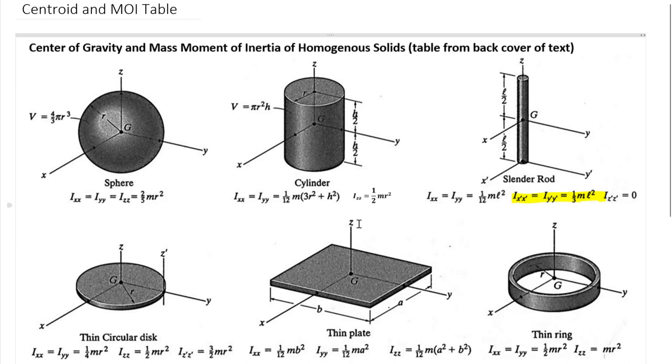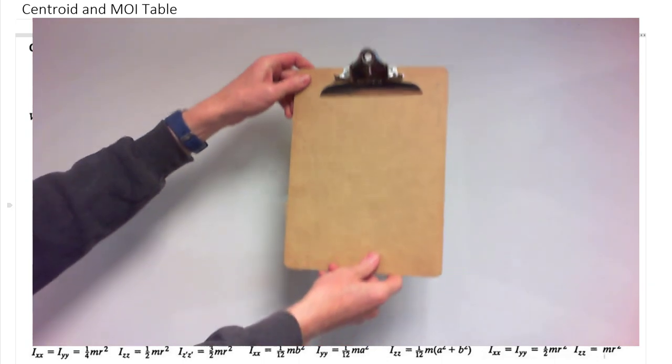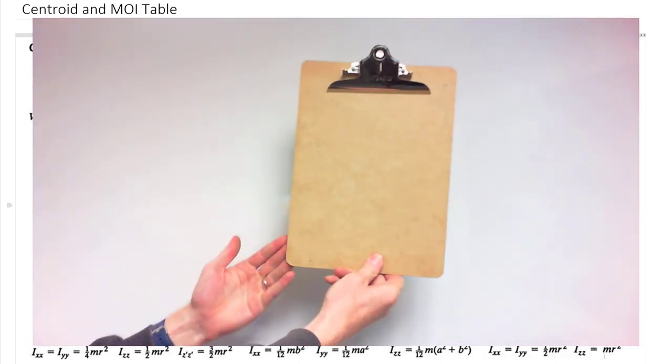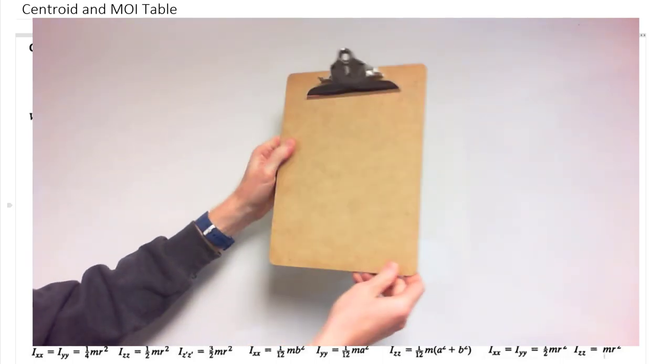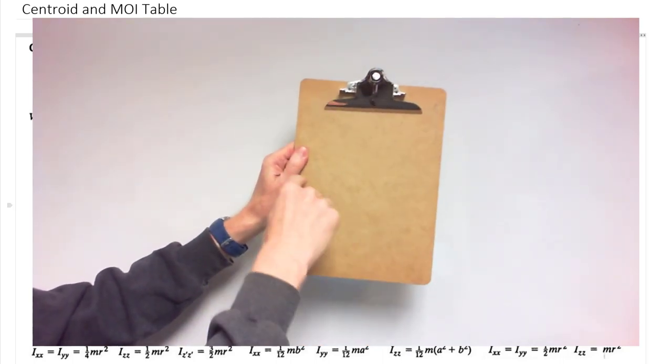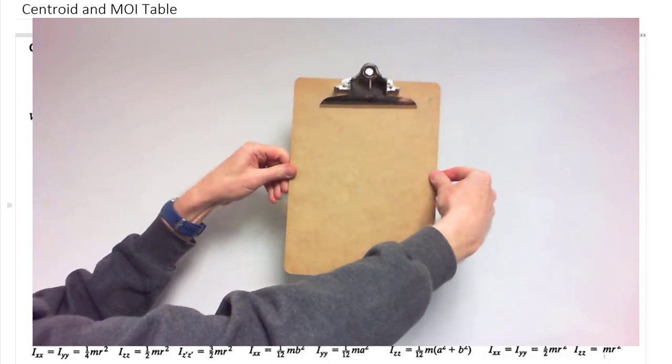And so to take a look at those, here's a little video that you can watch to get a better idea of the different axes when we're talking about rotating. So here's a clipboard representing that rectangle. Here we see the long edge b, the shorter edge a, and then also a thickness. If we think about rotating this clipboard about the centroidal x-axis, it would be like this.